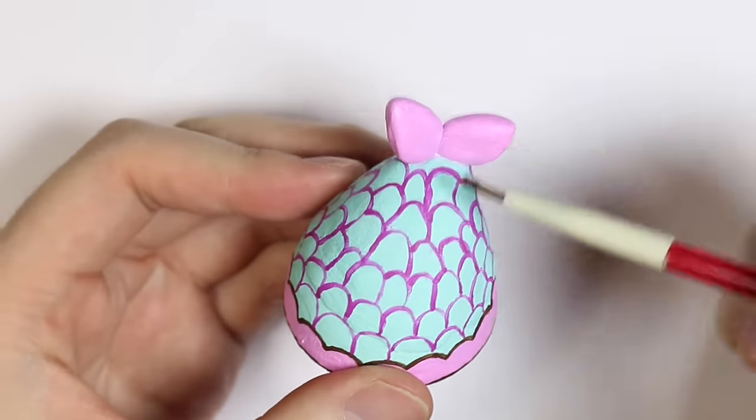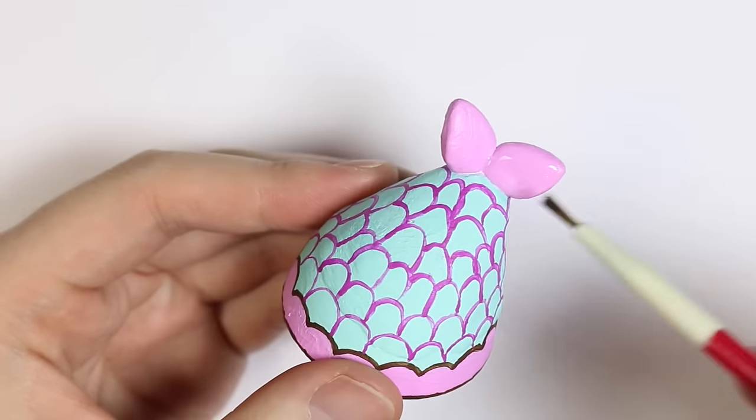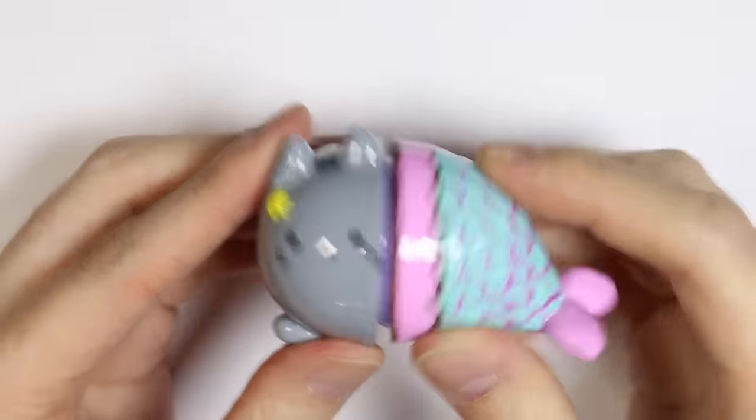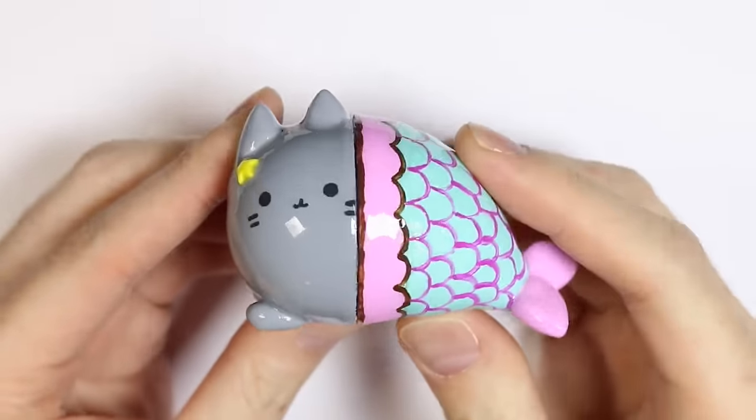Next you're ready for a layer of glaze. Here I'm using UV resin, but you can use any type of varnish, gloss, or floor polish as you want. And here you have your very own Pusheen EOS customization.